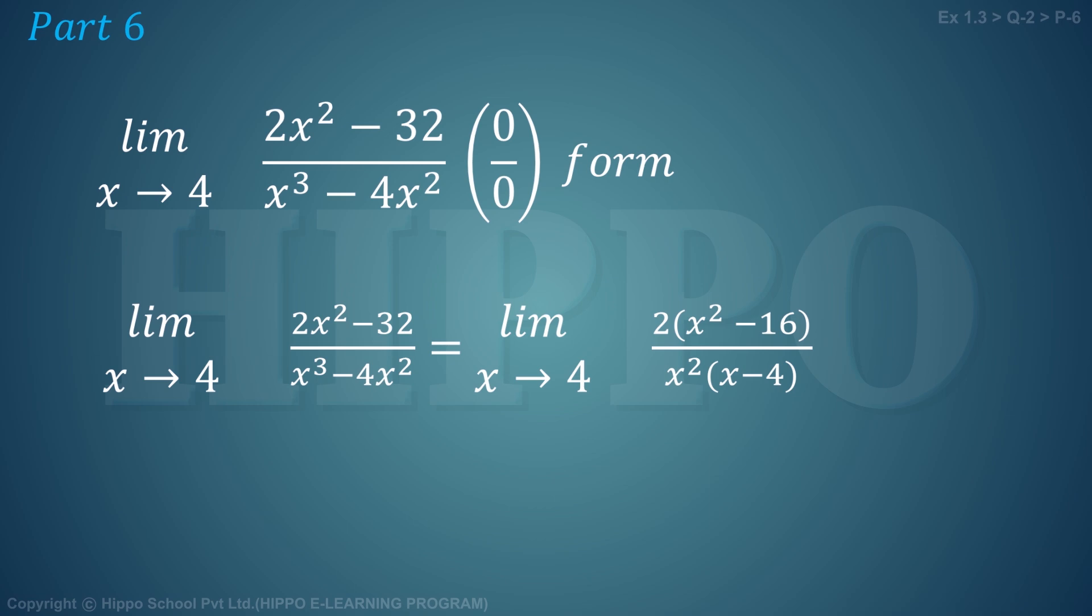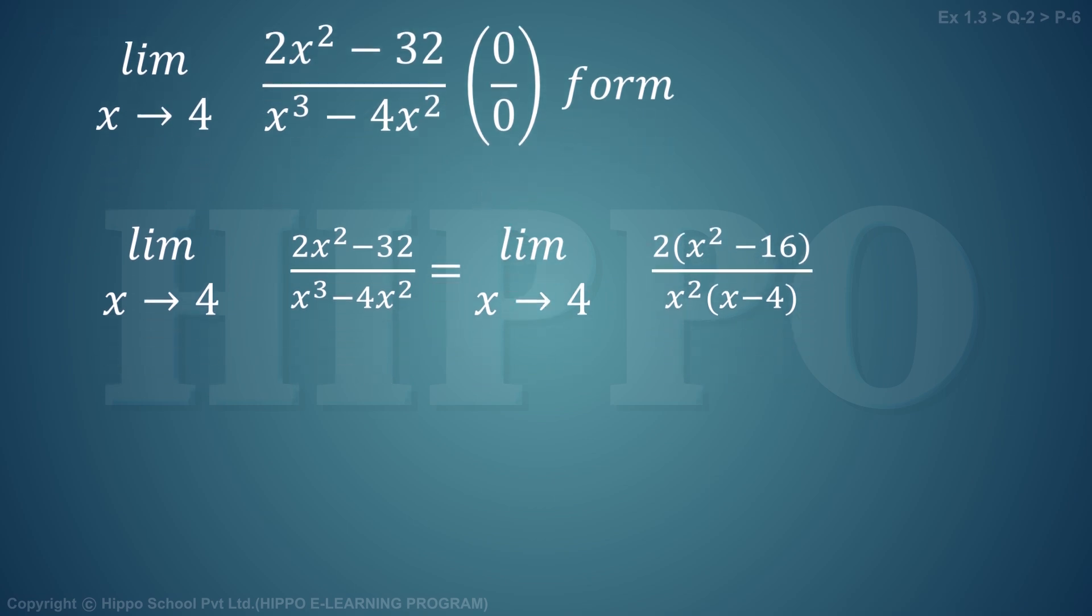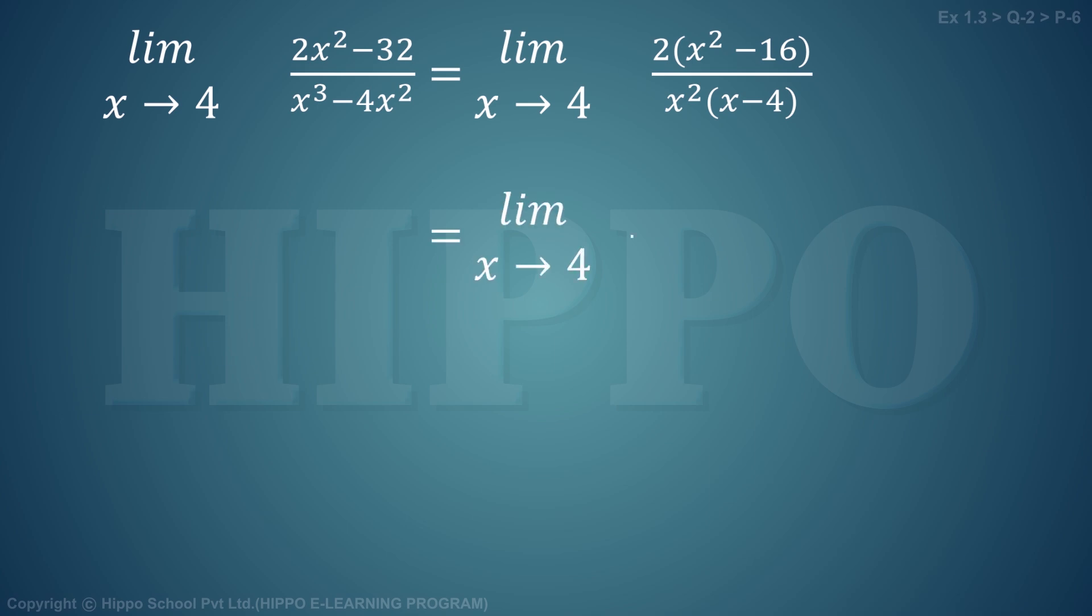Limit as x approaches 4 of 2(x + 4)(x - 4) divided by x²(x - 4). After canceling the common factor (x - 4), we have limit as x approaches 4 of 2(x + 4) divided by x².